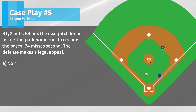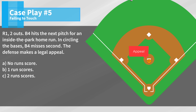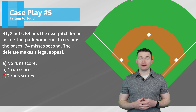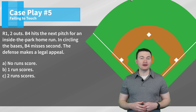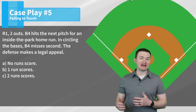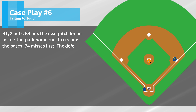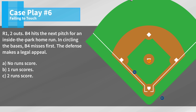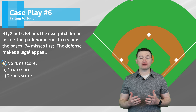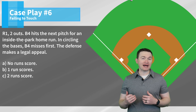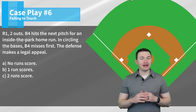Case play five: R1, two outs. B4 hits the next pitch for an inside-the-park home run. In circling the bases, B4 misses second. The defense makes a legal appeal. The correct answer is B — one run scores, and that's R1 coming all the way around. Because the batter runner is appealed for a base he was not forced to advance to, that is a time play, so the one run is going to count. Case play six: two outs. B4 hits the next pitch for an inside-the-park home run. In circling the bases, B4 misses first. The defense makes a legal appeal. The correct answer is A — no runs are going to score. Because the out is a third out made on a batter runner before they've touched first, it's treated just like a force out and no runs can score on the play.